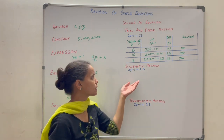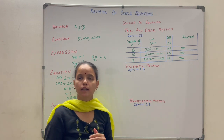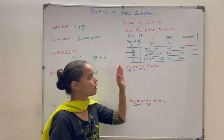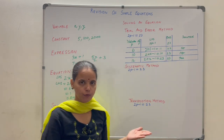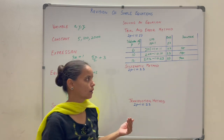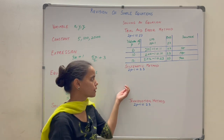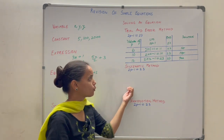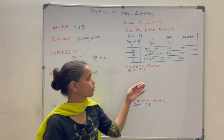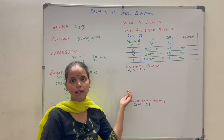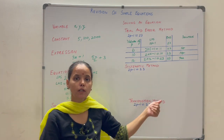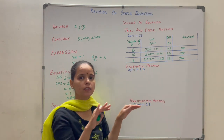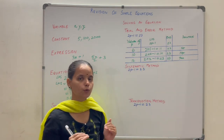Let us take the same equation and understand the systematic method. In this there are certain rules: whatever number you add on the left hand side, the same number you add on the right hand side. If you subtract a number on one side, subtract the same on the other. If you multiply by 2, multiply the other side by 2 as well. Similarly for division. And if you interchange left and right hand sides, the equation remains the same.